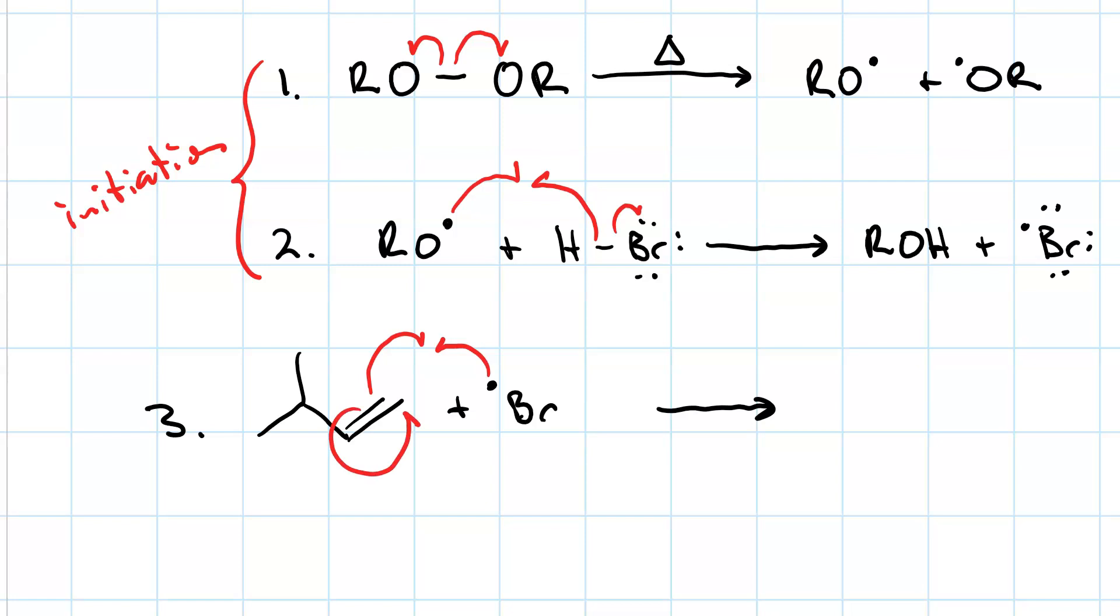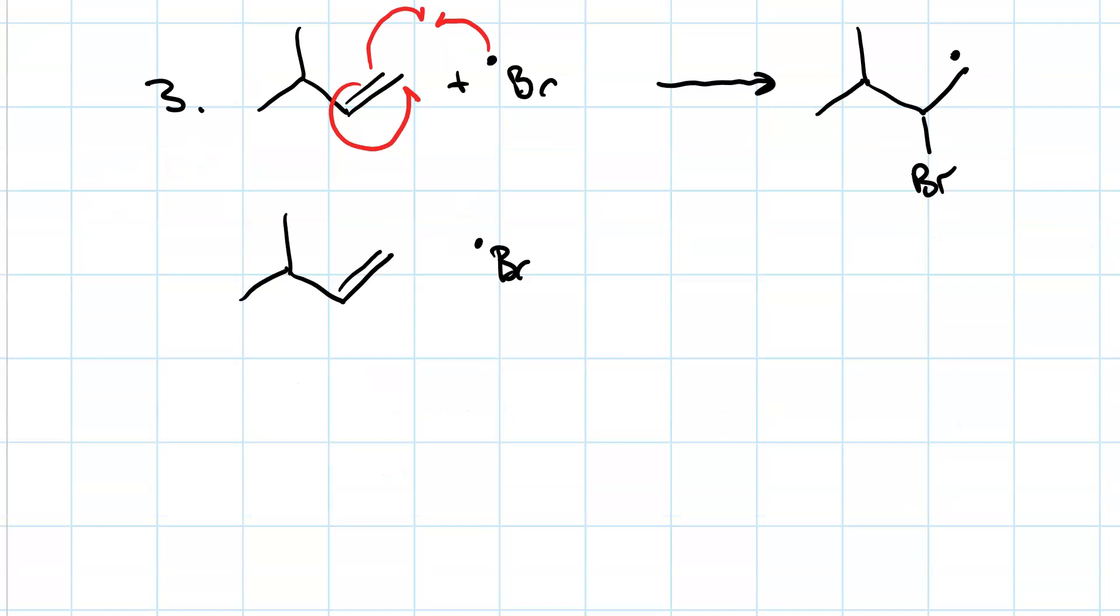So it could go there, which would give us the Markovnikov product and a primary radical, which is less substituted. Or it could couple like this and form the more substituted radical here with the anti-Markovnikov product. So this is a secondary radical and this is a primary radical. The secondary radical is more stable, which means that it exclusively forms this way.